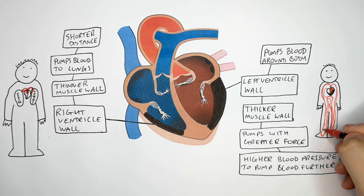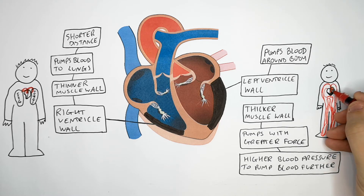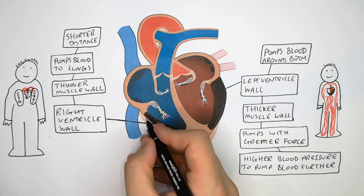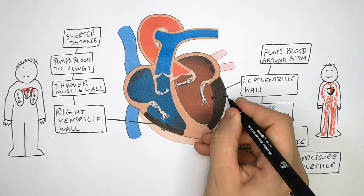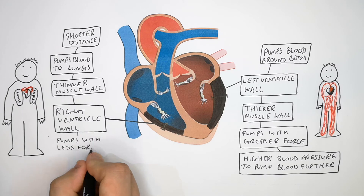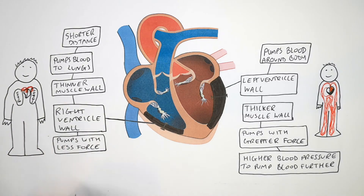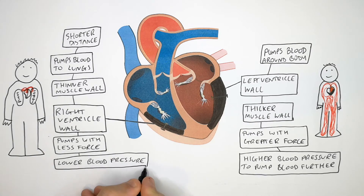The left ventricle pumps blood all the way around the body, so it requires a greater force and therefore a greater blood pressure. Remember, the right ventricle is thinner than the left, so it pumps blood with less force because it requires a lower blood pressure to only pump blood to the lungs.